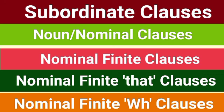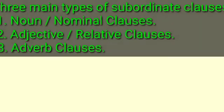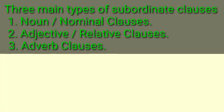Subordinate clauses can be studied under three categories depending on their functions in the sentence. When they function as nouns they are called nominal or noun clauses. When they function as an adjective they are called adjective or relative clauses, and when they function as an adverb they are called adverb clauses. Thus the three main categories of subordinate clauses are noun clauses, adjective clauses and adverb clauses.